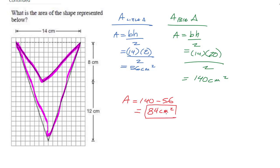To get the area of the V-shape, subtract the small triangle from the big one: 140 minus 56 equals exactly 84 centimeters squared. The key is to look for shapes within the shape — what shapes do you see, and do you add or subtract them?